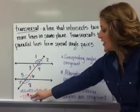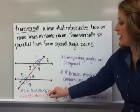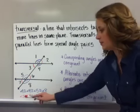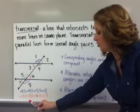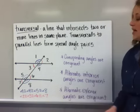Angle one is congruent to angle four, which is congruent to angle five, which is congruent to angle eight. And then the other set of congruent angles is angle two is congruent to angle three, which is congruent to angle six, which is congruent to angle seven.